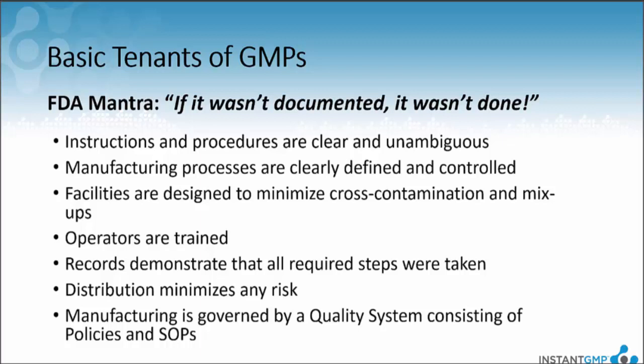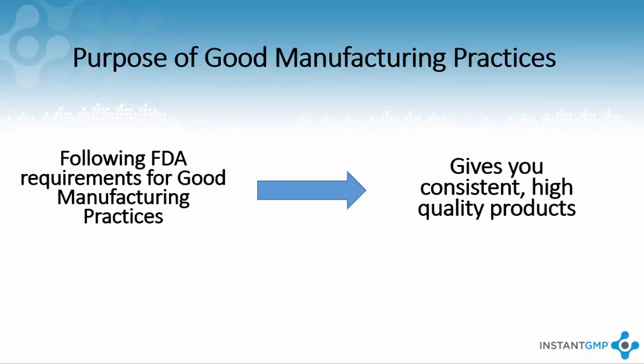From an FDA standpoint, this is for consumer safety. If an adverse effect occurs after consumption or application, the FDA's mission is to pinpoint where in the process something different happened. Without documentation to support the efficacy of your product, the FDA will doubt any claims you make. The purpose of these FDA regulations and GMPs is about producing consistent, high-quality products. Consistency ensures consumers are receiving the same product every time, and if the procedures built into the manufacturing of your goods are GMP compliant, then you will produce a high-quality product.